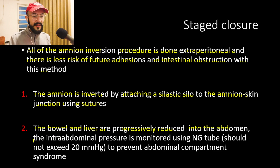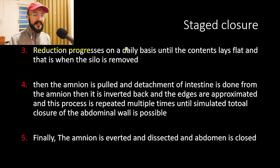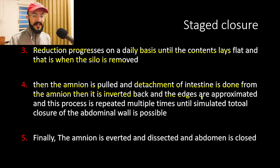The bowel and liver are progressively reduced into the abdomen, with intra-abdominal pressure monitored via NG tube — it should not exceed 20 mmHg to prevent abdominal compartment syndrome. Reduction progresses daily until the contents lie flat; the silo is then removed, the amniotic sac is pulled, the intestine is detached, and the sac is inverted back with edges approximated. This process is repeated until simulated total closure of the abdominal wall is possible, at which point the amniotic sac is dissected and the abdomen is closed.